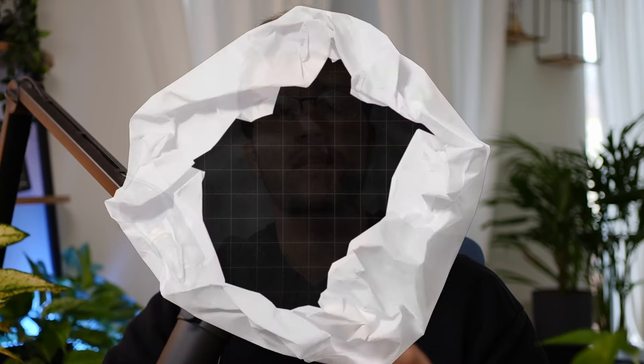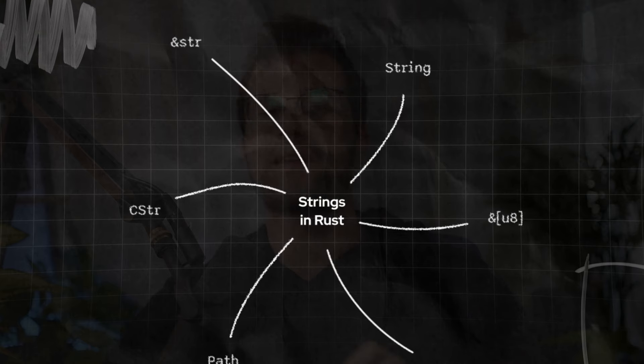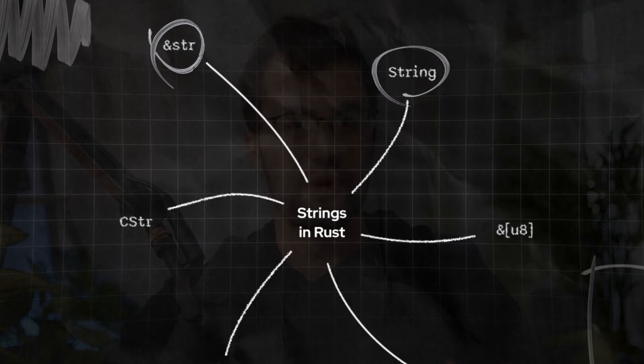Understanding strings in Rust can be quite confusing and challenging, especially if you are a beginner. There are just too many different string types. The first step to really understand the differences between these types is to understand the fundamental difference between the String and the reference str type. By the end of this video, you will have a fundamental understanding of the basic difference between these two types, and we are also going to look at a practical use case.